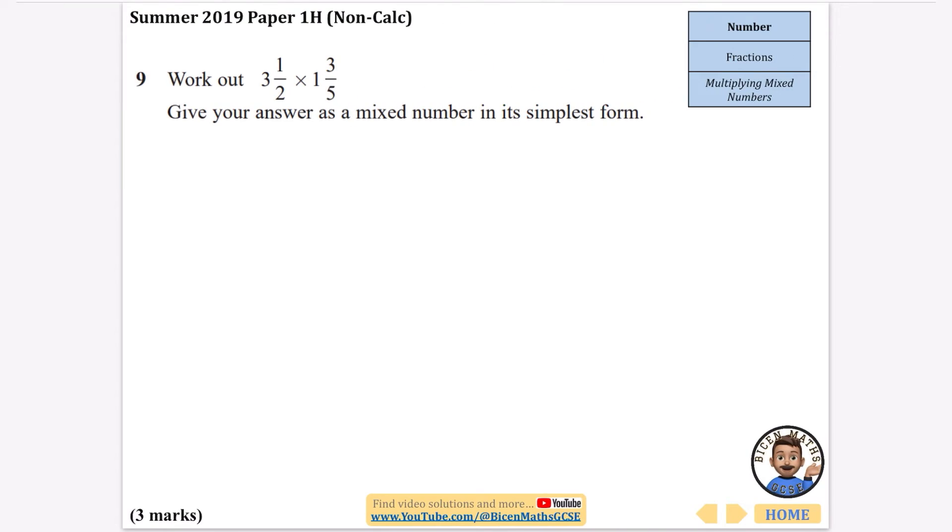This time we're going to do multiplying. And again, it's non-calculator. So we need to convert both of these. First of all, 3 and 1/2, that's going to be 3 times the 2 plus the 1, that is going to be 7 over 2. And this one, we multiply the 1 by the 5 and add on the 3. So that is going to be 8/5. Multiplying these together, I'm going to show you something that you can do as a bit of a trick. We can do the 8 divided by the 2. If I do the 8 divided by the 2, I can cross the 8 out and the 2. But when I do 8 divided by 2, I get left with 4.